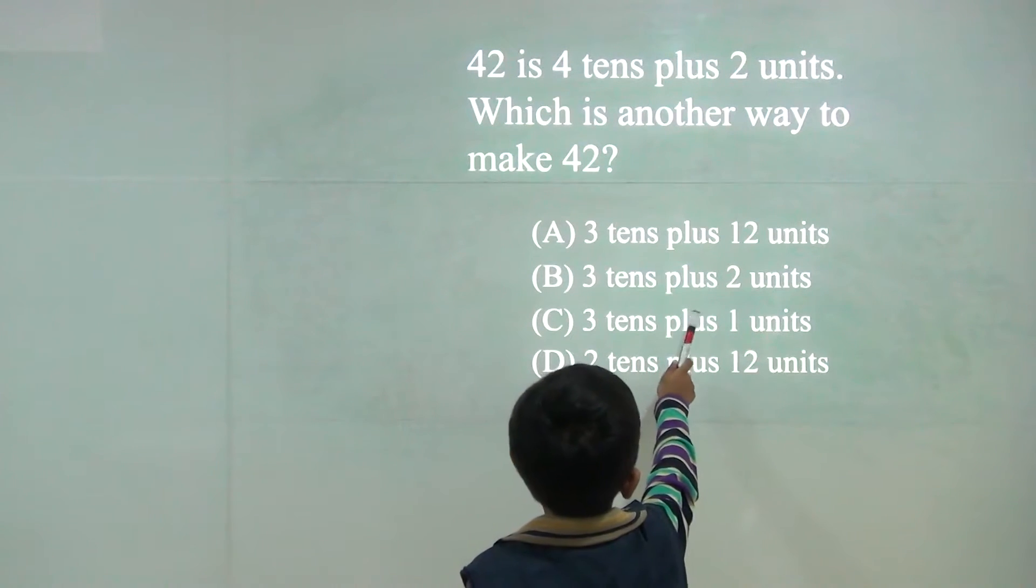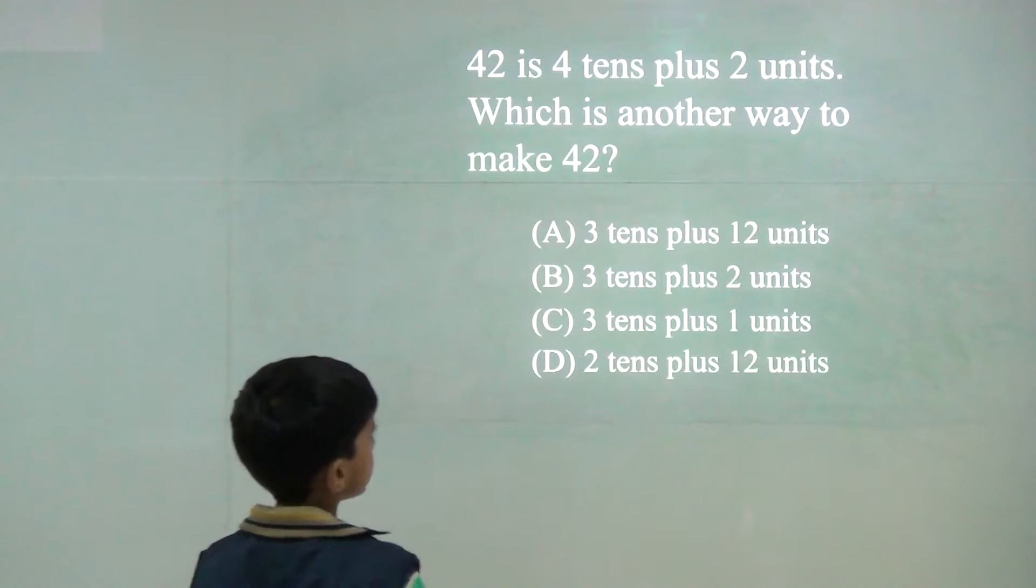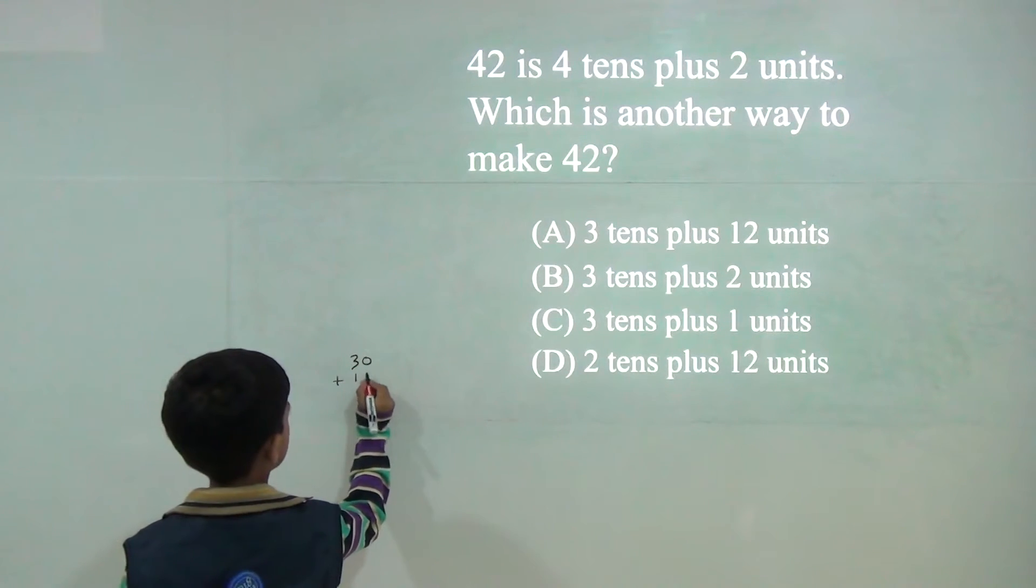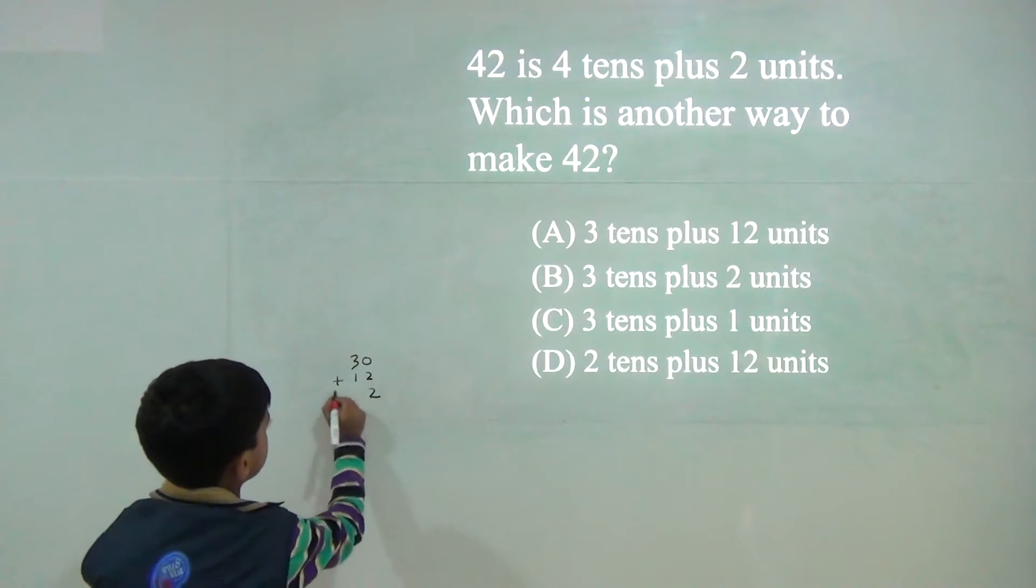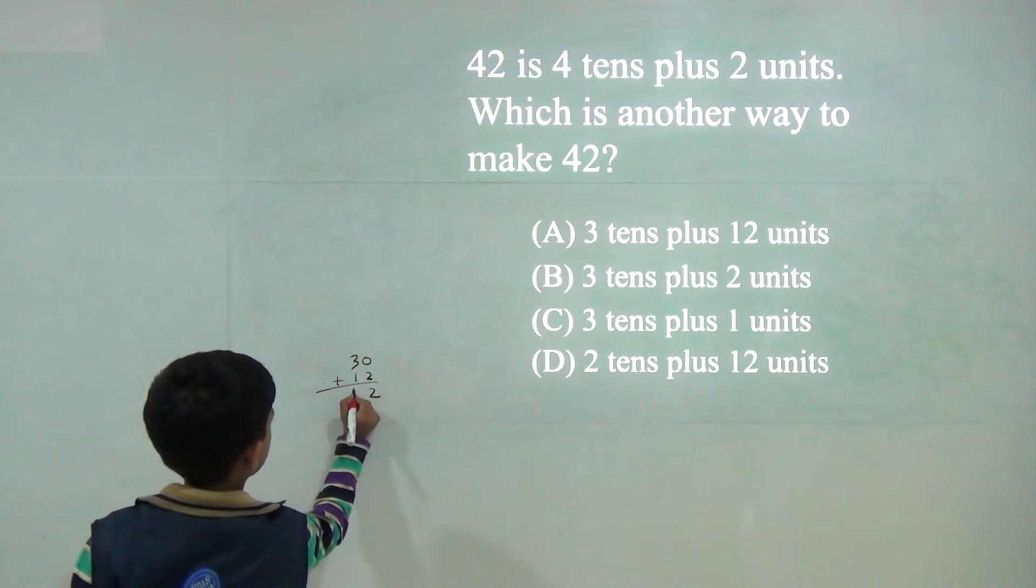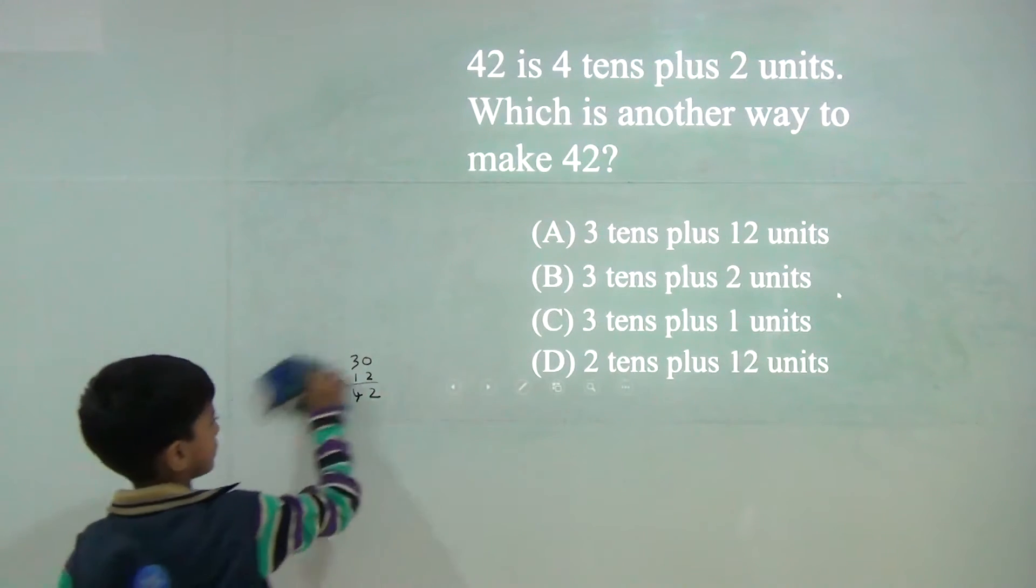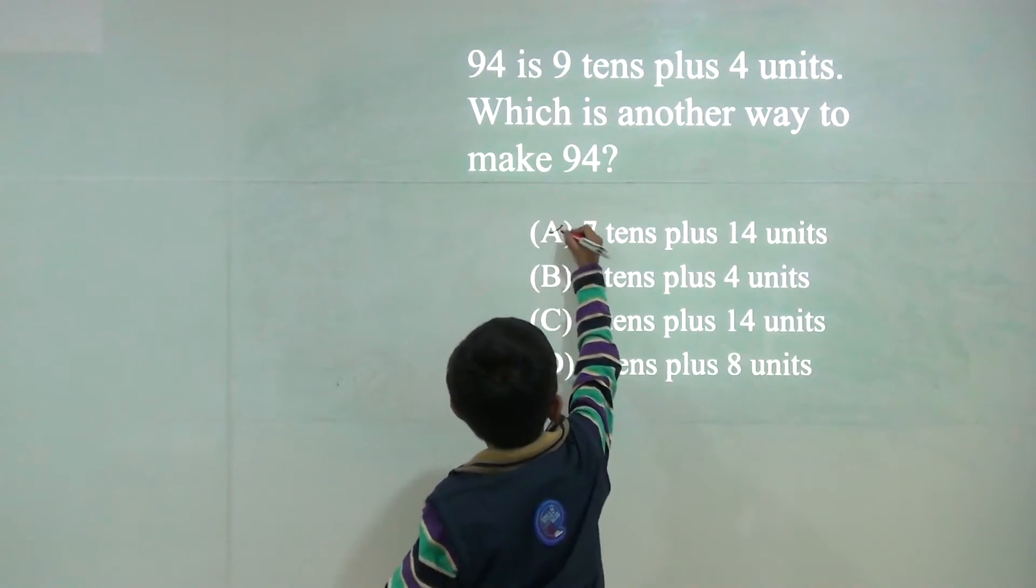3 tens plus 2 units. 3 tens plus 12 units. It would be 2 and it would be 4. So first can make. So answer would be A.